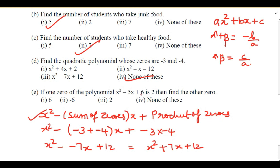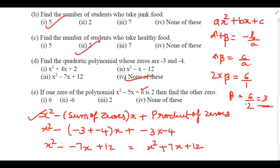If the zeros are given, the quadratic polynomial is x² - (sum of zeros)·x + (product of zeros). Here one zero is 2, so substituting: 2 × beta = c/a = 6/1 = 6. Therefore beta = 6/2 = 3. The other zero is 3. That answer is also not among the choices, so it is 'none of these'.